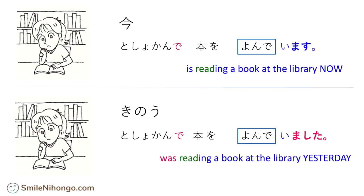That's all you have to change to say ongoing actions in the past tense: 昨日、図書館で、本を読んでいました.